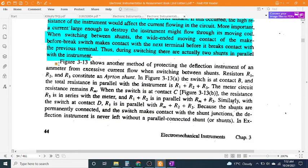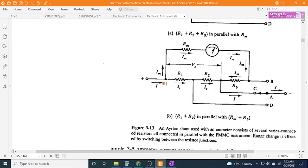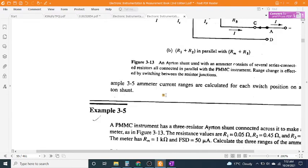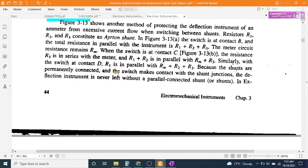Ayrton shunt: When the switch is at contact B, Figure 3-13B, the resistance R_1 is in series with the meter, and R_2 + R_3 is in parallel with R_M + R_1. Similarly, with the switch at contact D, R_1 is in parallel with R_M + R_2 + R_3.